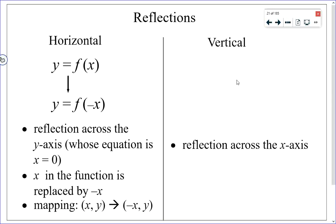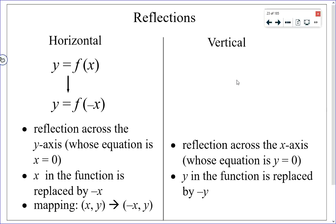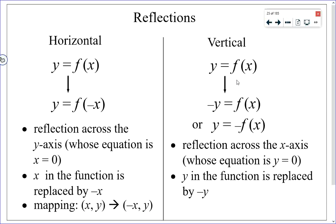Vertical reflections are across the x-axis, whose equation is y equals 0. Something above the x-axis reflected vertically will be below it afterwards, and vice versa. In the function, y is replaced with negative y, so y equals f(x) becomes negative y equals f(x), which we can rewrite as y equals negative f(x). The mapping is (x, y) becomes (x, negative y).